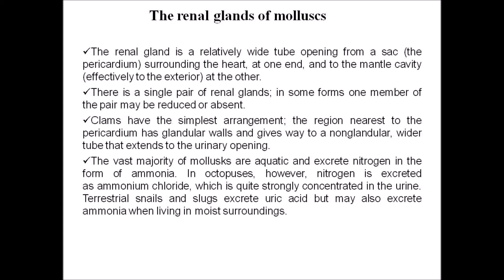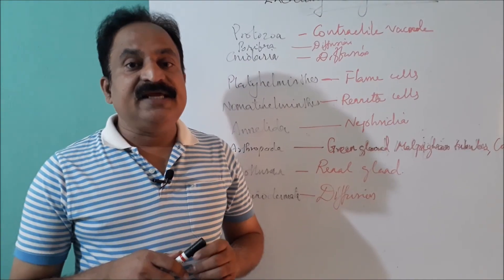In octopus, however, nitrogen is excreted as ammonium chloride, which is quite strongly concentrated in the urine. Terrestrial snails and slugs excrete uric acid, but may also excrete ammonia when living in moist surroundings.